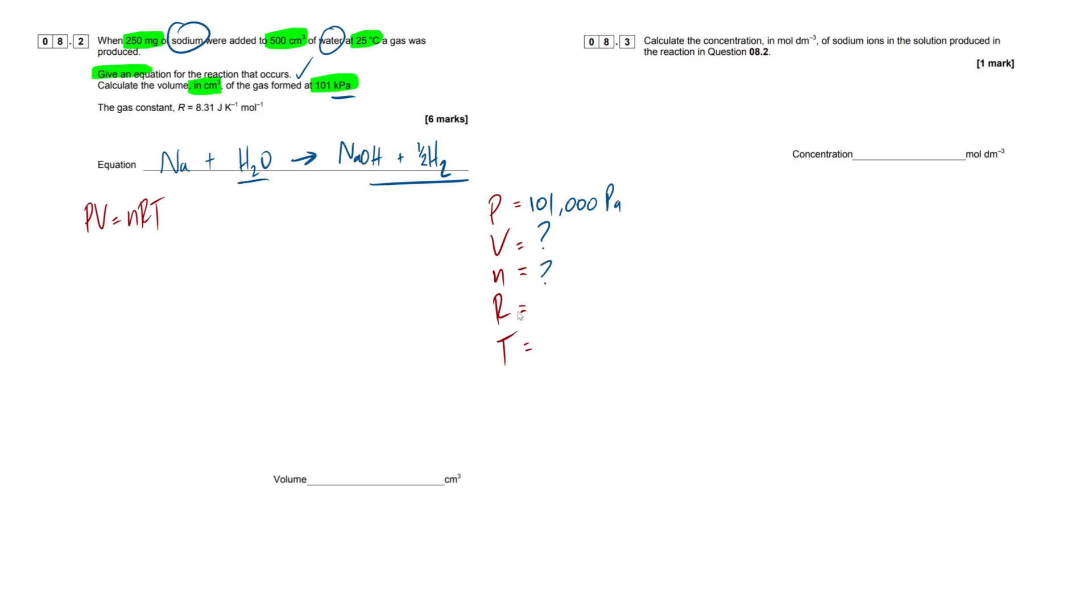Ideal gas constant, 8.31. Temperature, 25 degrees Celsius. Chuck 273 on there because we want it to be in Kelvin, and that's just going to be 298 Kelvin.